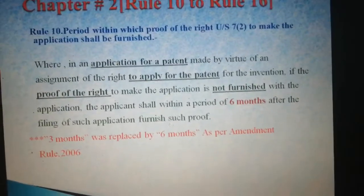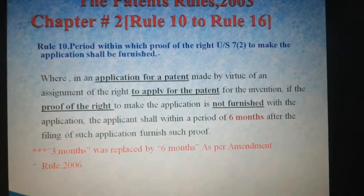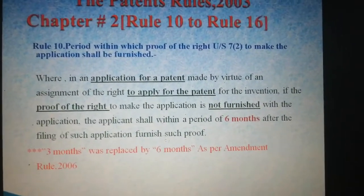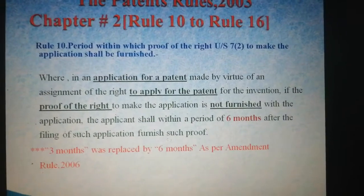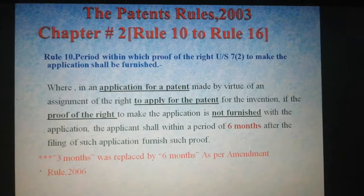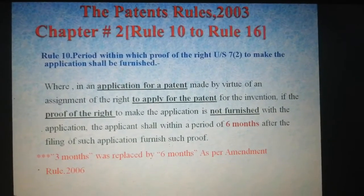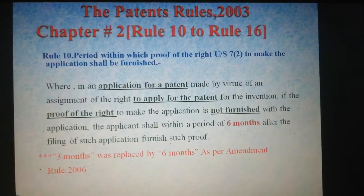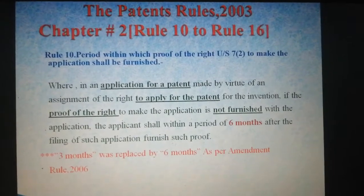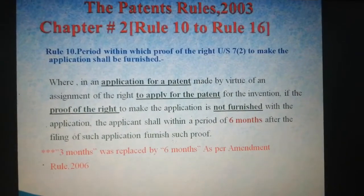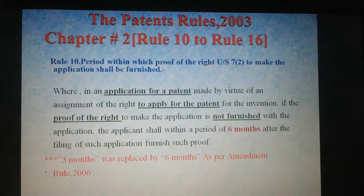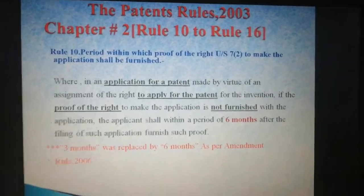Let us see what this rule says in detail. Where an application for a patent is made by virtue of an assignment of the right to apply for the patent for the invention, if the proof of the right to make the application is not furnished with the application, the applicant has within a period of 6 months after the filing of such application to furnish such proof.